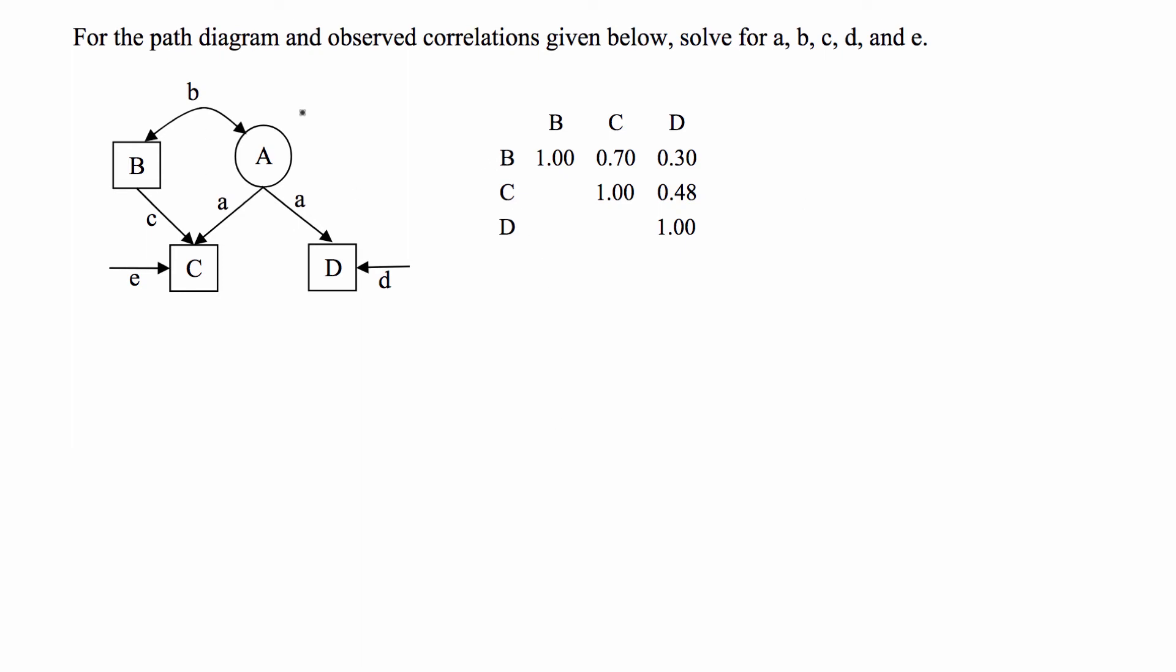Hey guys, in this video I'm going to go over this path analysis problem. We're given a correlation matrix and this simple structure and we're asked to solve for the letters in the structure A, B, C, D, and E.